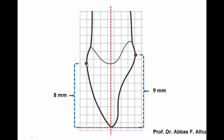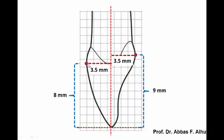The point or peak of curvature labially is 8 mm away from the incisal edge, while the peak of curvature at the cingulum is 9 mm away from the incisal edge. The width of the crown at these points is 7 mm, therefore it is 3.5 mm from the cingulum and 3.5 mm from the labial to the midline.